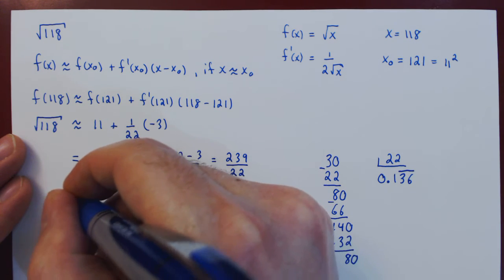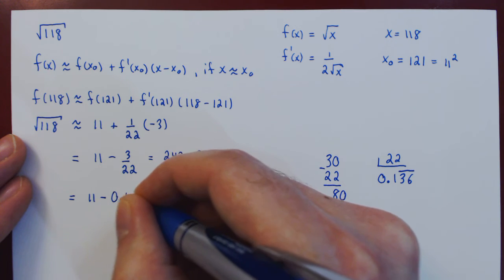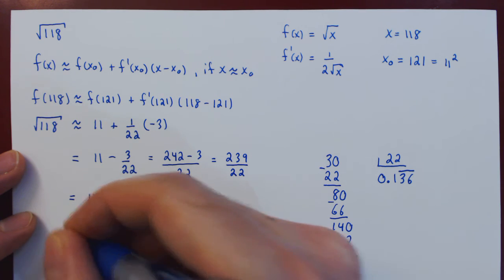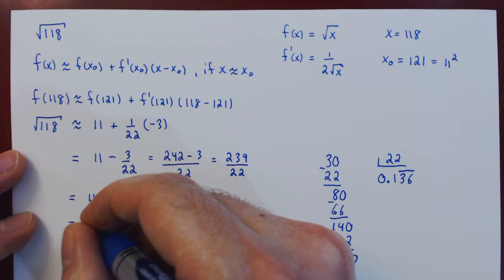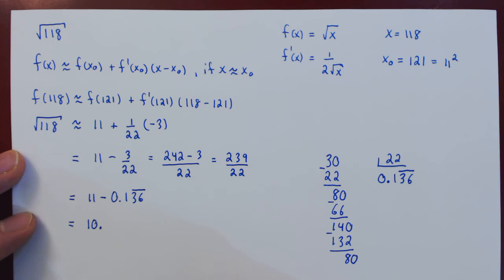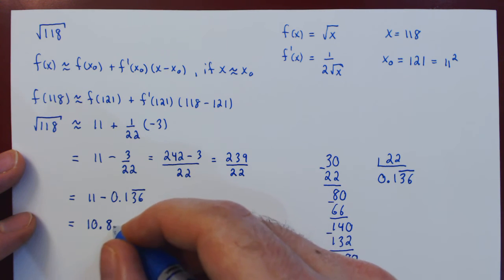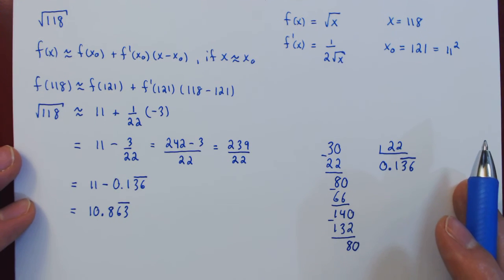So, in decimals, we have here 11 minus 0.136 periodic. Let's perform this subtraction. If you remove from 11 a small positive quantity, like 0.14, you bring this down to 10. And now you can think of, well, what do we add to get back to 11? Well, we have to add 0.8, 0.6, and 0.3 periodic.